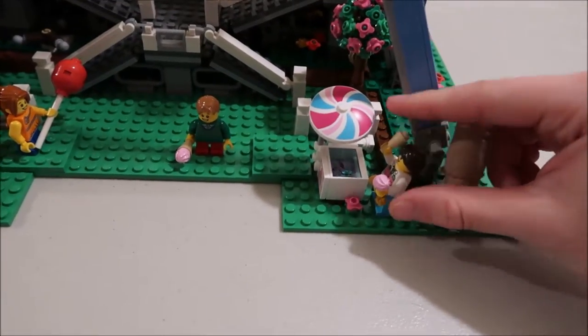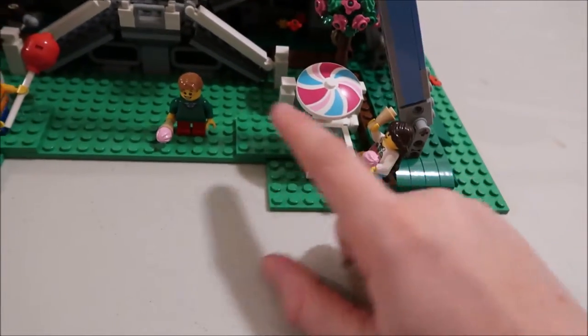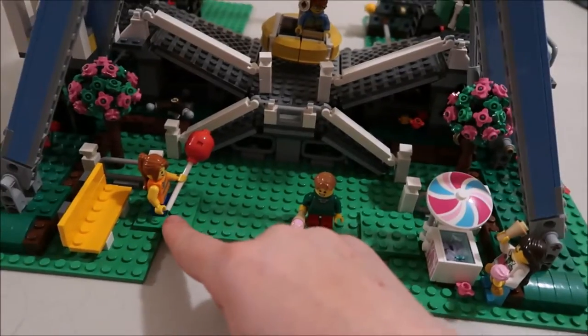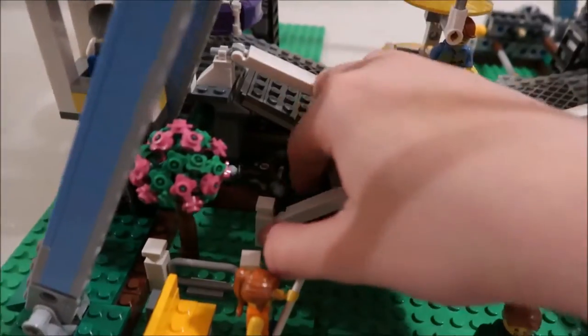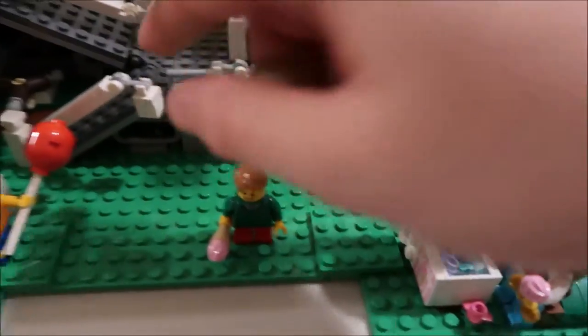I'm just going to go through some of the details. So there's this person serving ice cream, this kid that got ice cream, a kid with a balloon. There's a lot of greenery and flowers and trees and stuff. There's also a lot of moving elements and stuff that do different things.